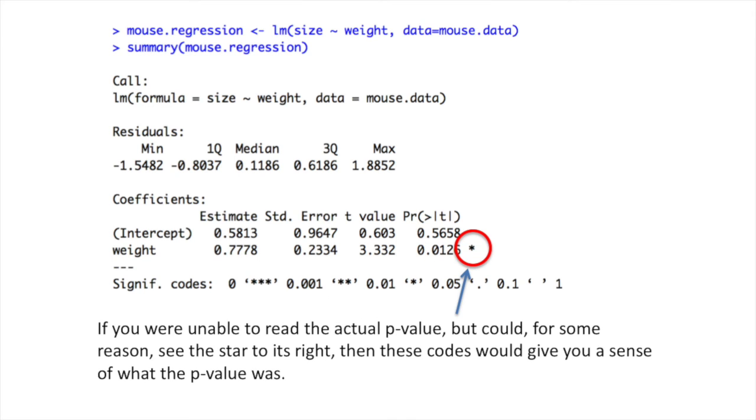If you were unable to read the actual p-value, but could, for some reason, see the star to its right, then these codes would give you a sense of what the p-value was.